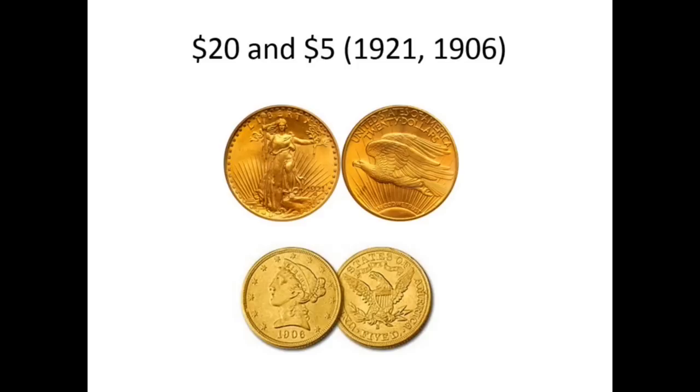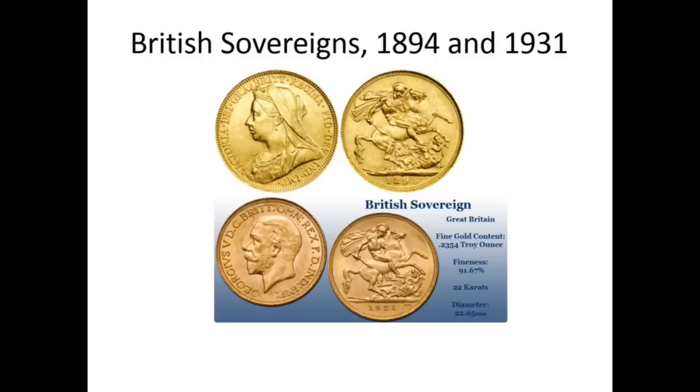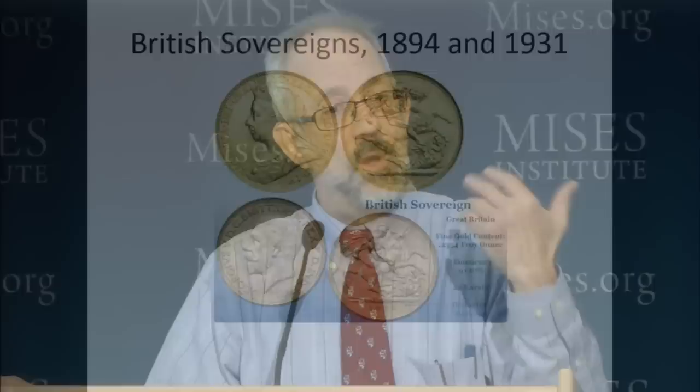Bottom line: there weren't different currencies under the gold standard. They were all the same currency — gold. Here are $20 pieces and $5 pieces from 1921 and 1906, and here are British sovereigns. It didn't matter whether you had dollars in Great Britain or carried sovereigns into the United States. As long as the seller was convinced it wasn't counterfeit, they would be accepted. You didn't have to change money going from one country to the next.